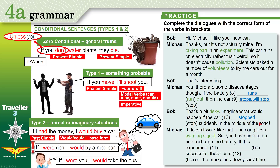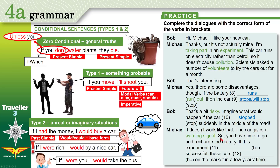'It doesn't work like that. The car gives a warning signal — it tells you that the battery is very low, so you have time to go and recharge the battery.' 'If this experiment is successful, these cars will be on the market in a few years' time.' This is something probable — conditional type 1: if this experiment is successful, these cars will be on the market.